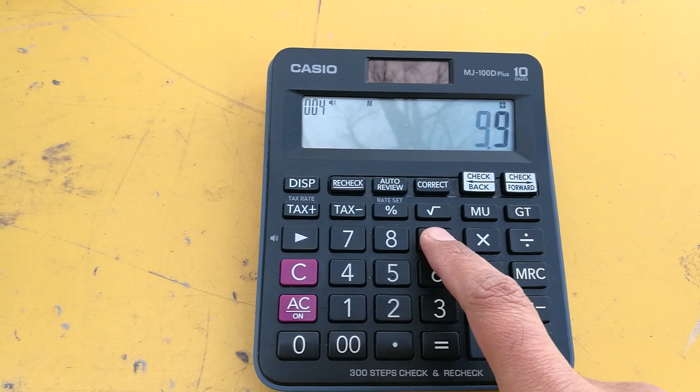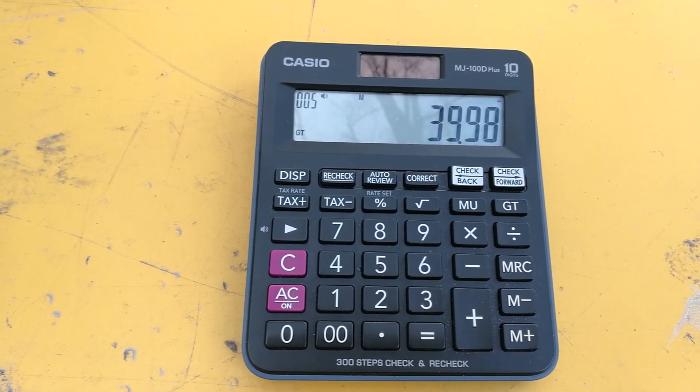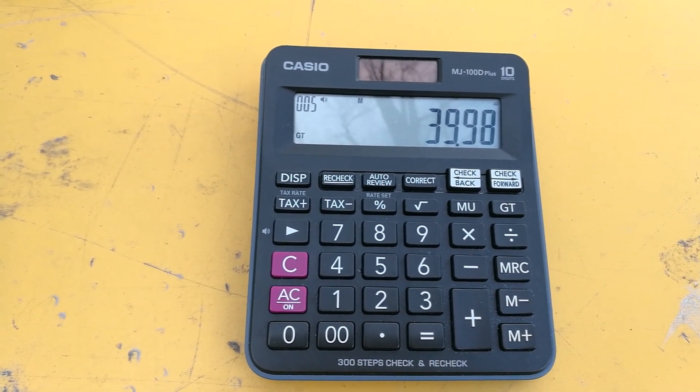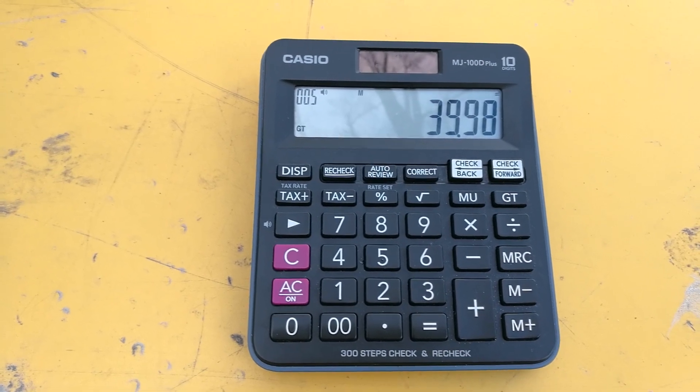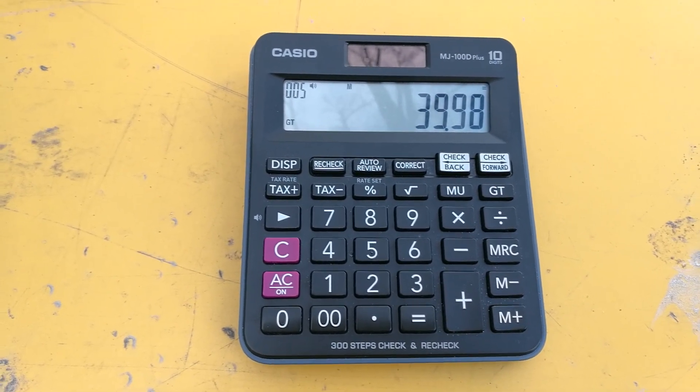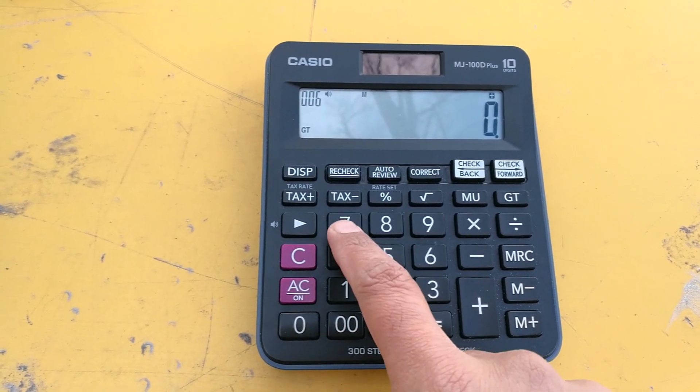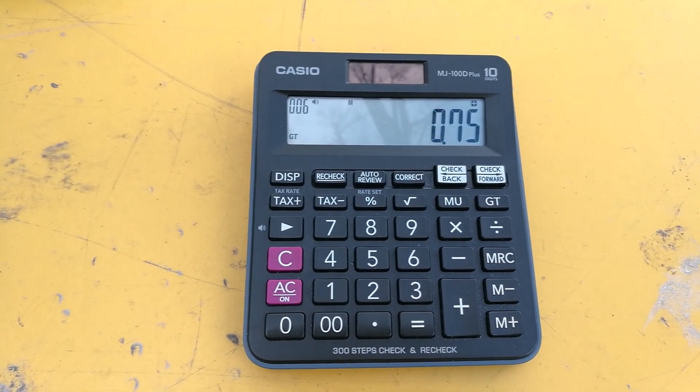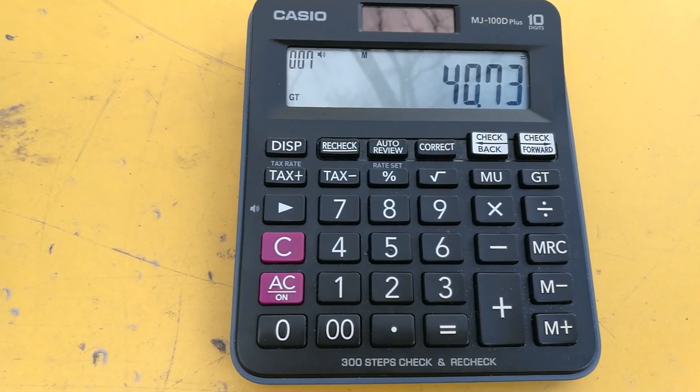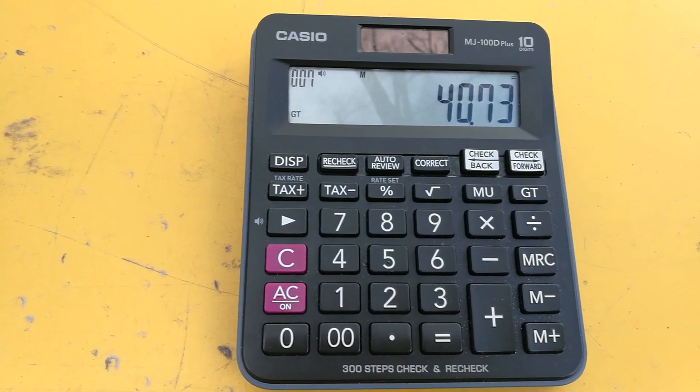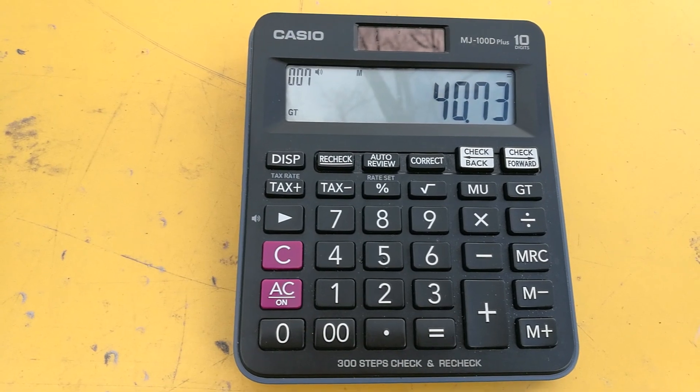Then you have a service charge, let's say 0.75 cents. So the total all together will be 40.73 cents, or whatever the currency you have.